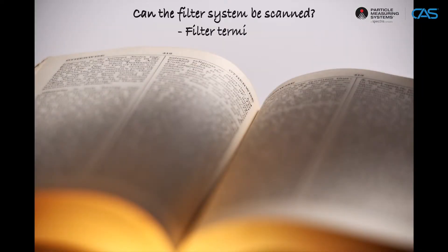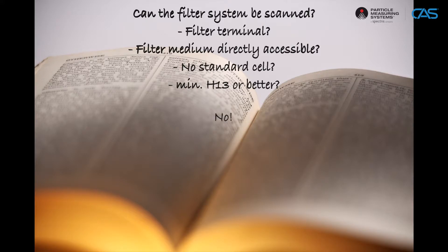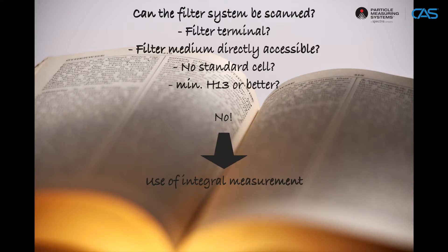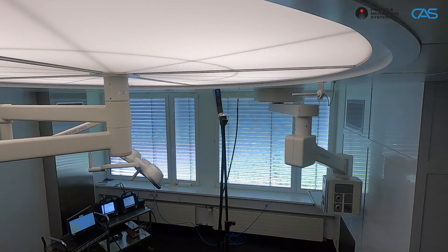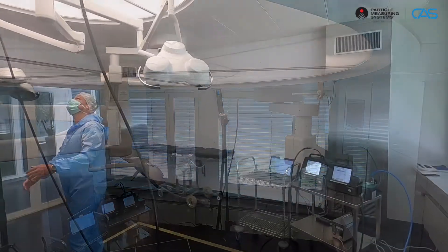If one of the questions when selecting the measurement method was answered with no, then the integral measurement method should be used. The integral measuring method is a method that is less sensitive than the scanning method. Basically, it is a measuring method with a stationary probe.